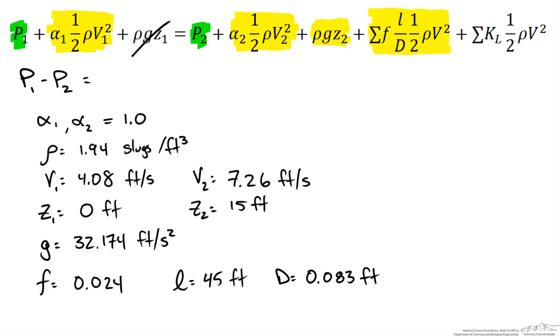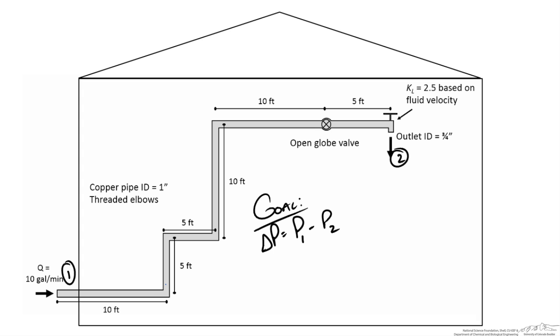We can move on to our last term, our minor losses. For the minor loss term we need to determine the loss coefficients for each connection and designated component like the contraction bend at the faucet. So we look these up. So for each 90 degree bend, which we have one here, one here, one there, one there. We don't count the one at the faucet because we are given the loss coefficient for that faucet.